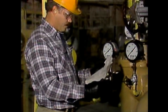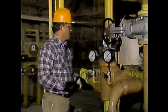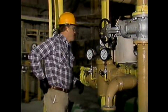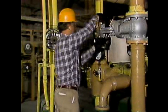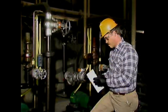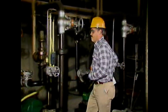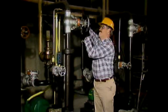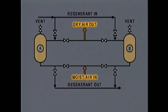Flow diagrams can be helpful when you have to reposition valves because of changes in operating conditions. Making sure valves are in the correct positions is called lining up the valves. To see how you can use a flow diagram to help line up valves, we'll look at an example of rerouting flow in an air dryer system. This is a diagram of the system.